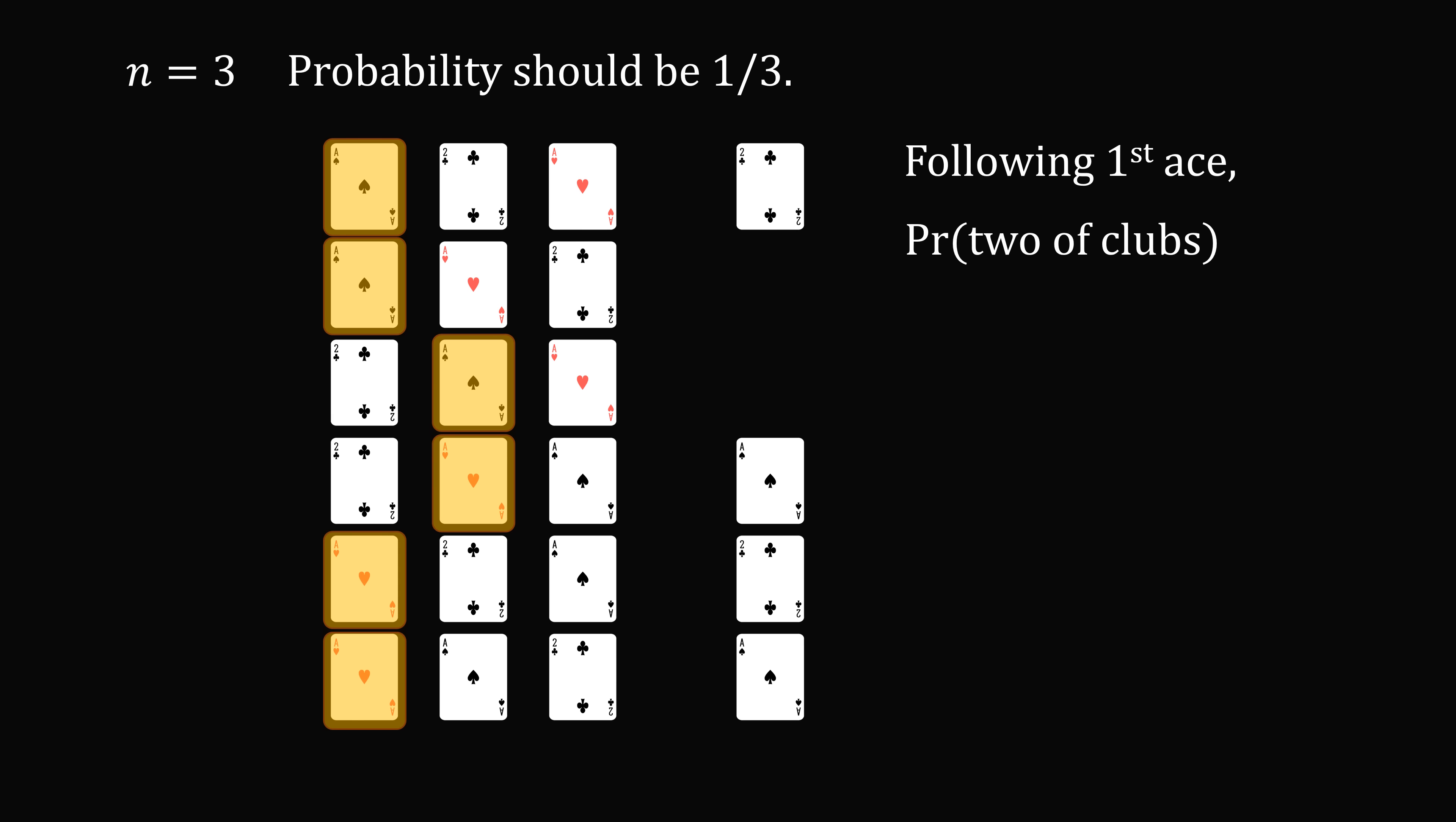So, following the first ace, the probability that we have a two of clubs is equal to the probability we have an ace of spades. And each of these is equal to 2 over 6, which equals 1 over 3. So this proves that our intuition was not right, but our careful calculation was correct. Both probabilities are equal to each other.